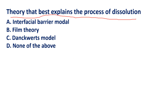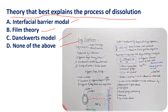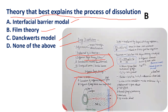Question: Which theory best explains the process of dissolution? Options: Interfacial Barrier Model, film theory, Danckwerts model, none of the above. Among the three theories, the diffusion layer theory — also called film theory — is the best accepted theory to understand the process of dissolution. Therefore the answer is B — film theory.